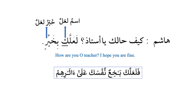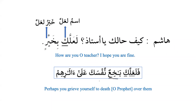The best way to learn Arabic is to learn a rule and then find one example from the Quran or a sahih hadith. For la'alla, we have the verse: la'allaka bakhiun nafsaka — perhaps you grieve yourself to death, O Prophet sallallahu alayhi wa sallam, over them. Ka is ismu la'alla and bakhiun is khabaru la'alla. As mentioned, in the Quran la'alla is translated as 'perhaps.'